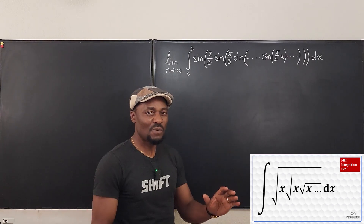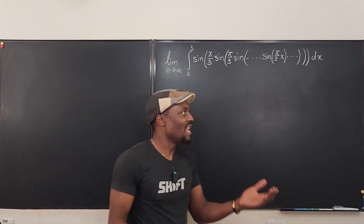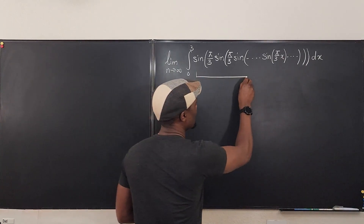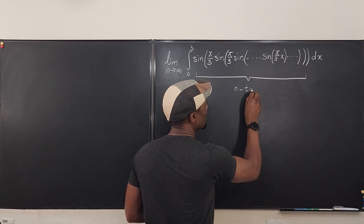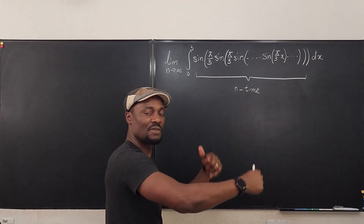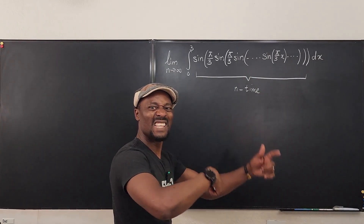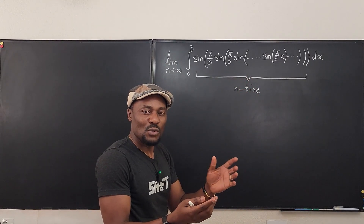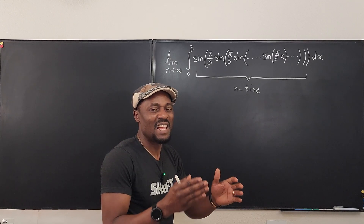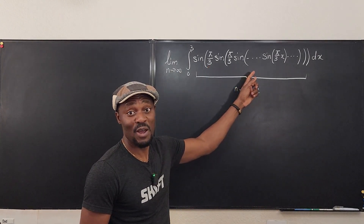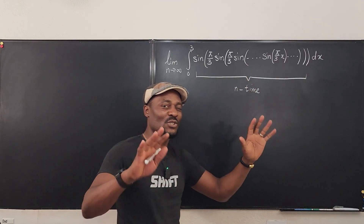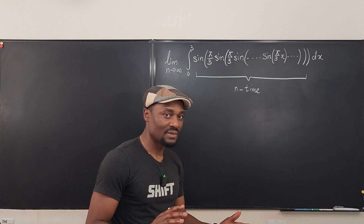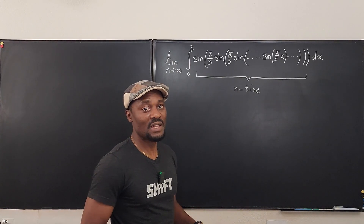Before you start solving, you want to ask some questions. Firstly, does this converge — does it get smaller with time? There are infinitely many — this is n times — so the number of times you take the sine of this, sine of pi over 3, is infinite. Does it converge? Well, the sine of anything is always between minus 1 and 1, so the absolute value is usually less than 1, unless it is pi over 2. So clearly this should converge.